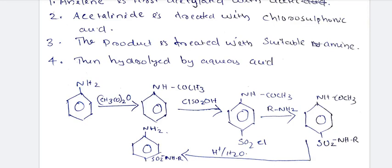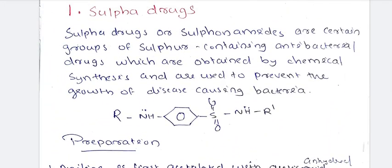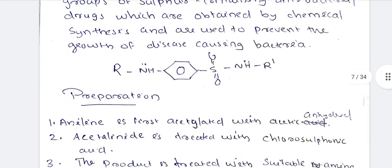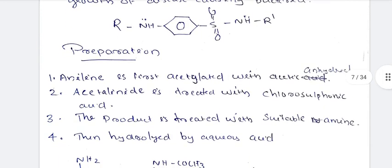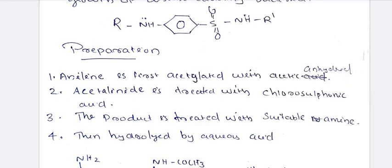Sulfa drugs are sulfonamides — sulfur-containing antibacterial drugs which are obtained by chemical synthesis, used against bacterial infections. In the preparation, we first treat with acetic anhydride (CH3CO)2O.